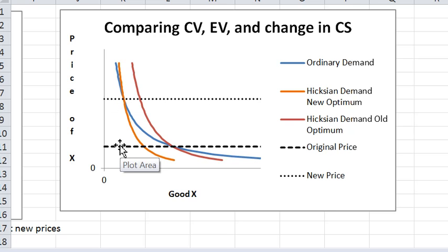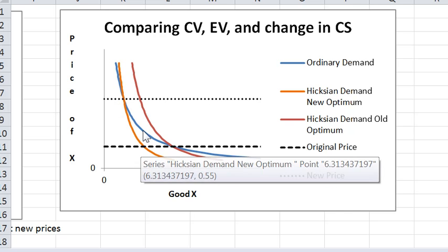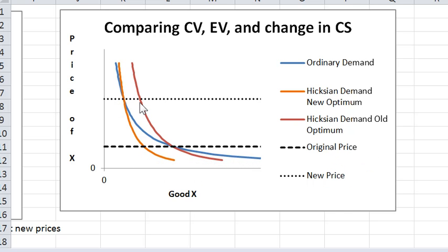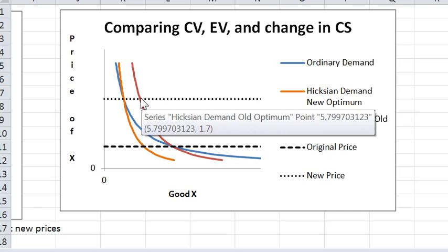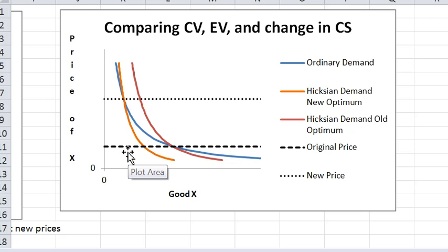The area between the original price and the new price to the left of the orange curve is the equivalent variation. The area to the left of the red curve between the original price and the new price is the compensating variation. So the compensating variation is bigger here.